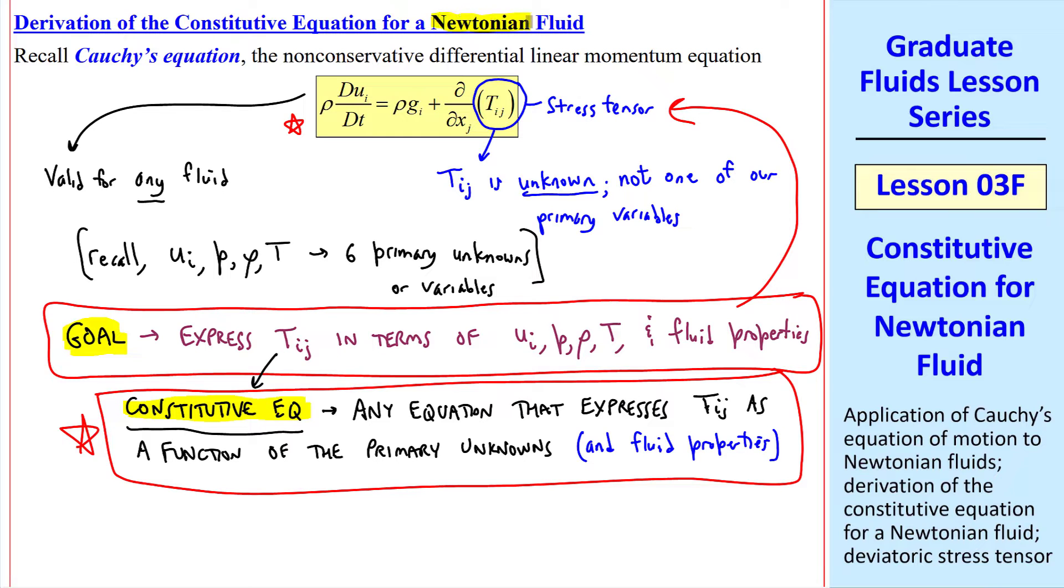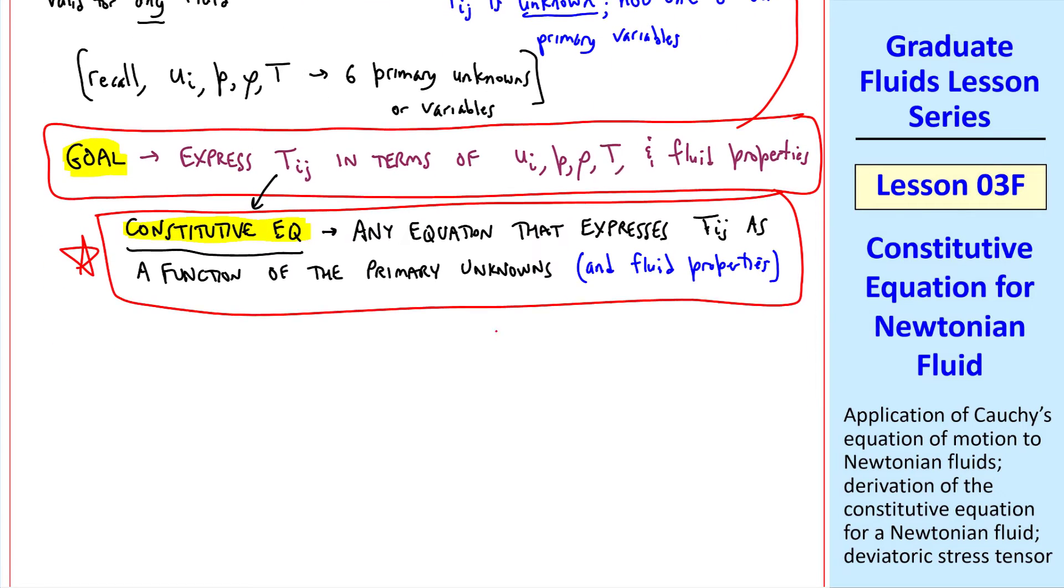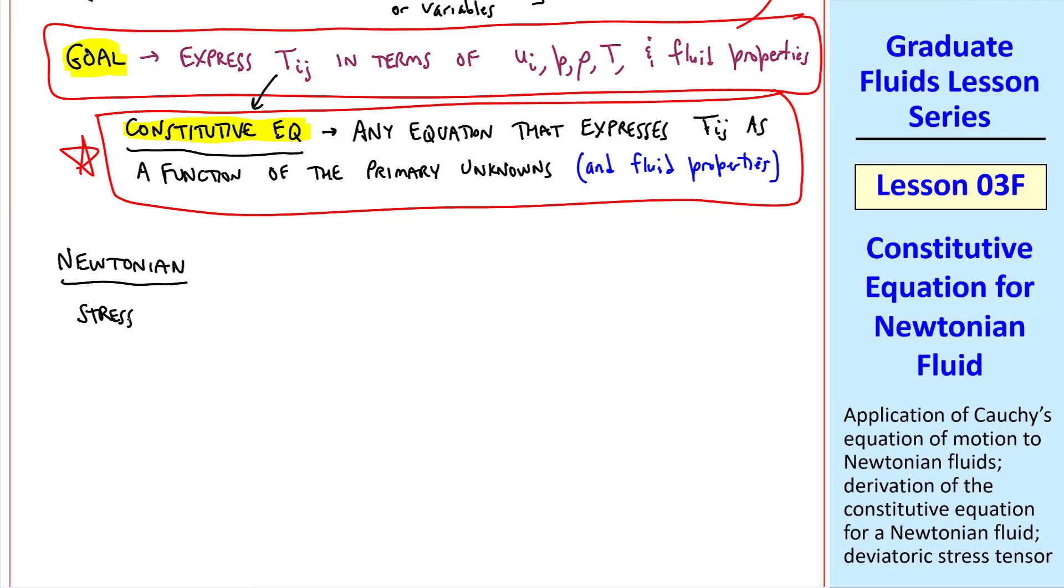As mentioned up here in the title, we'll do this only for a Newtonian fluid. As a review, let's define a Newtonian fluid. For a Newtonian fluid, stress is a linear function of strain rate. Examples include the most common fluids, water and air, oil, etc.